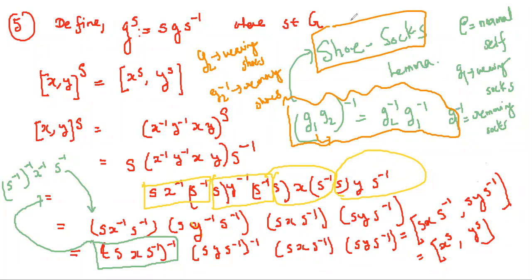All credit goes to Joseph A. Gallian — this is in the book Contemporary Abstract Algebra. I will end this session today and we will continue in the next class.